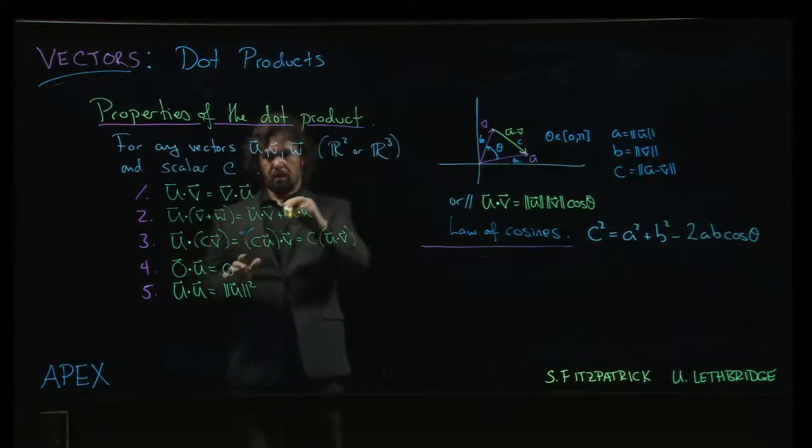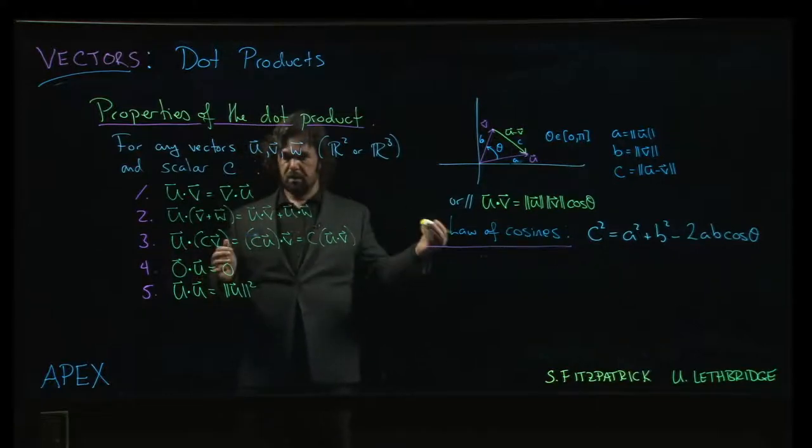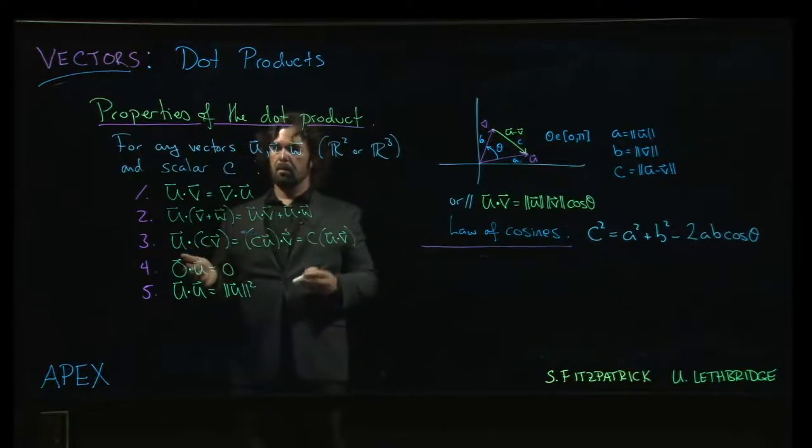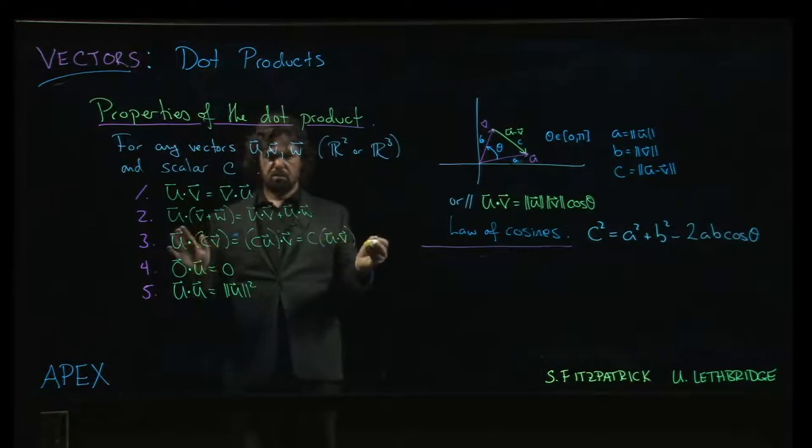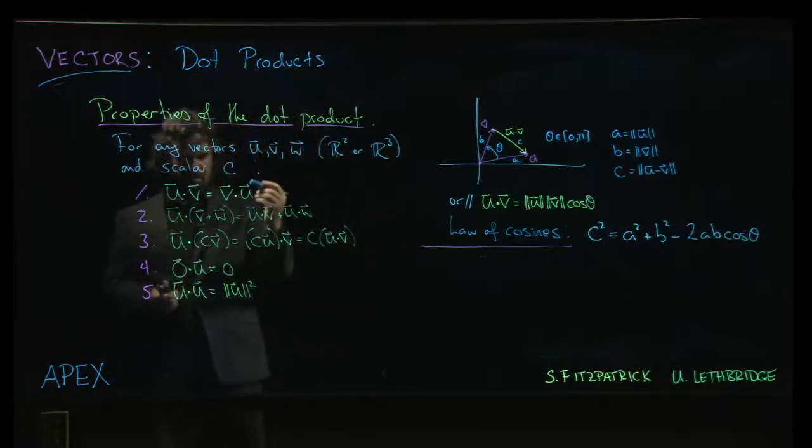That we get by multiplying the components of the corresponding vectors and then adding them up. Now all of these properties are pretty well—easy is maybe a word we shouldn't throw around, but they're not so hard to see.